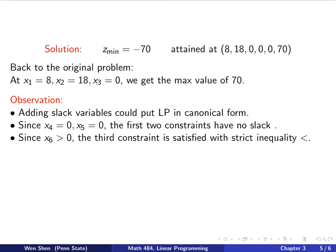Let's add some observations. First, it's very convenient that by adding slack variables, we put the linear programming problem in canonical form. Second, in the actual solution, x4 and x5 equal 0. These are slacks for the first two constraints, meaning those constraints are satisfied with equality — no slack. And since the last slack variable x6 is 70, which is strictly bigger than 0, the third constraint is actually satisfied with strict inequality.